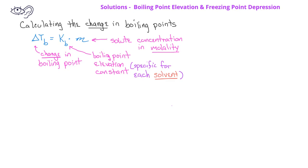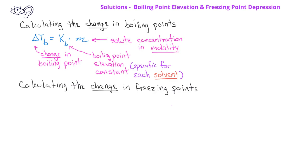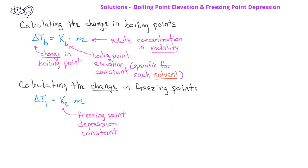At the same time, the change in the freezing point can also be determined by a similar equation. The only difference is that we use subscript f for the freezing point instead of b for the boiling point. So we end up with the equation delta T subscript f, or the change in the freezing point, equals K sub f — the freezing point depression constant — times the molality of the solute concentration. It's important to note that K sub b and K sub f will have different values, even for the same solvent.